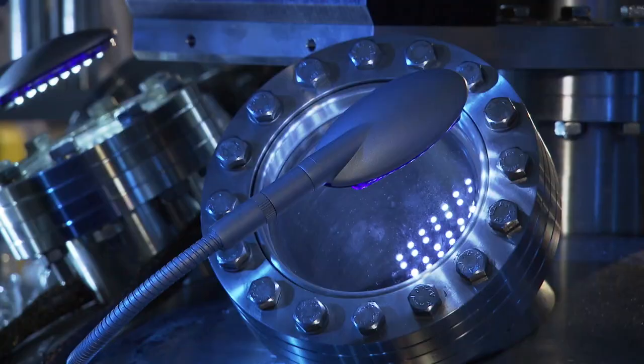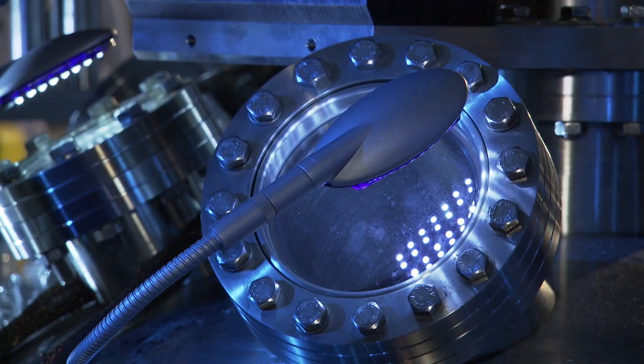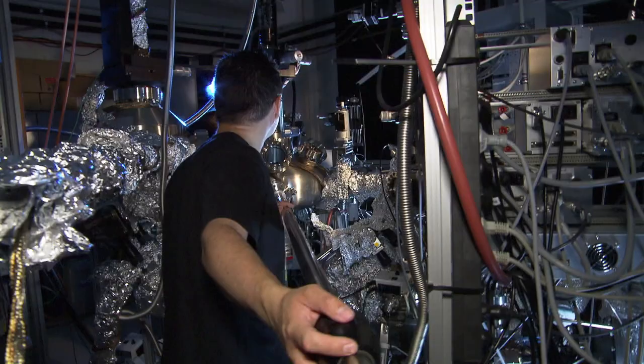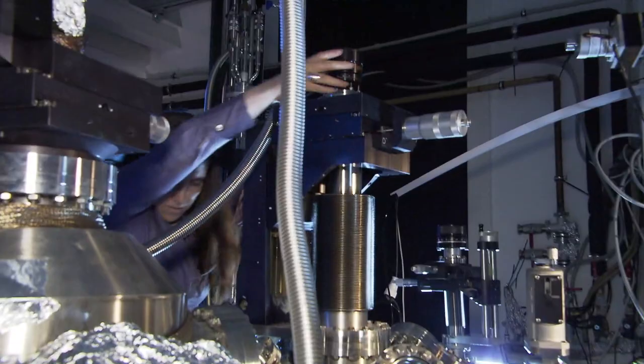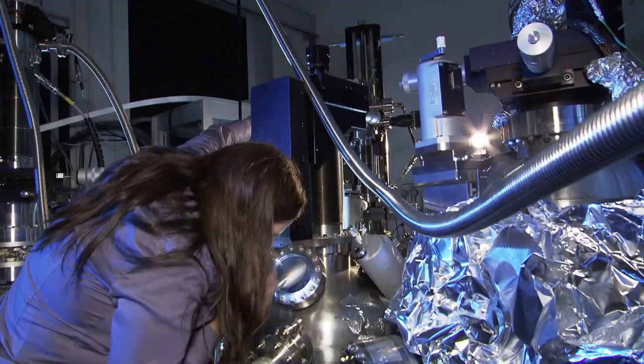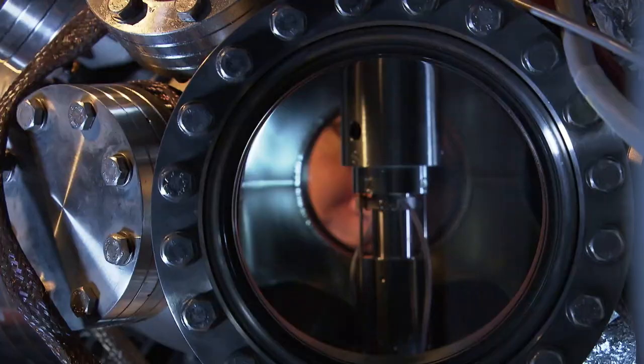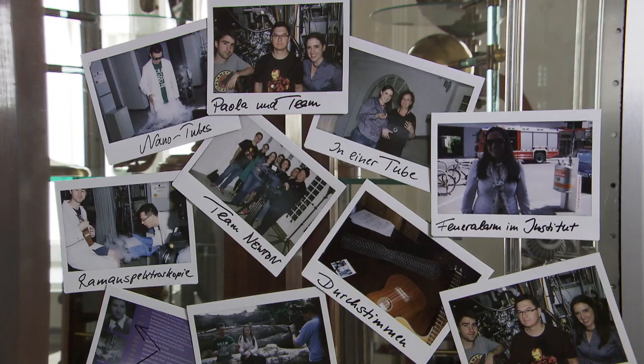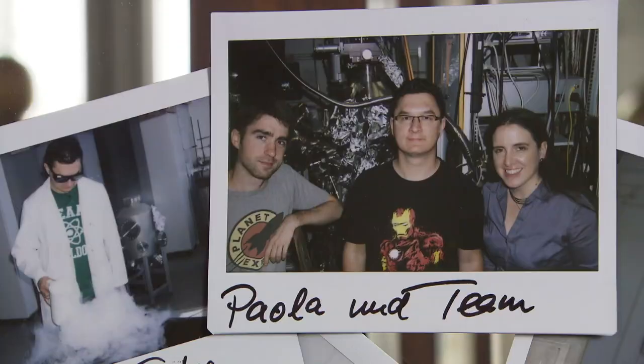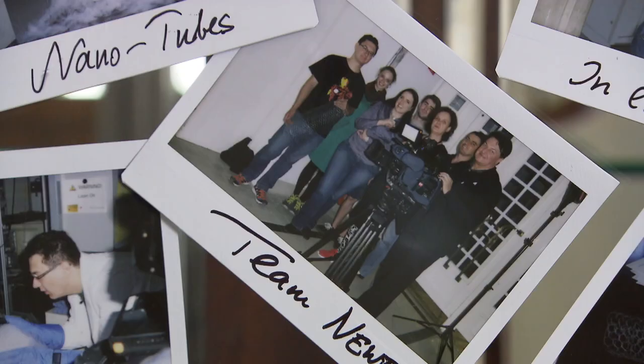This room with measuring instruments that look like UFOs is a photon emission laboratory. The scientists are interested in the tube's chemical properties. Oleg is sending nanotubes into a vacuum chamber, while X-rays knock electrons out of the sample. The tubes have to be extremely clean for this analysis. Paola Ayala has developed a cleaning method that's unique in the world. Only well-researched tubes can improve products like these phones.